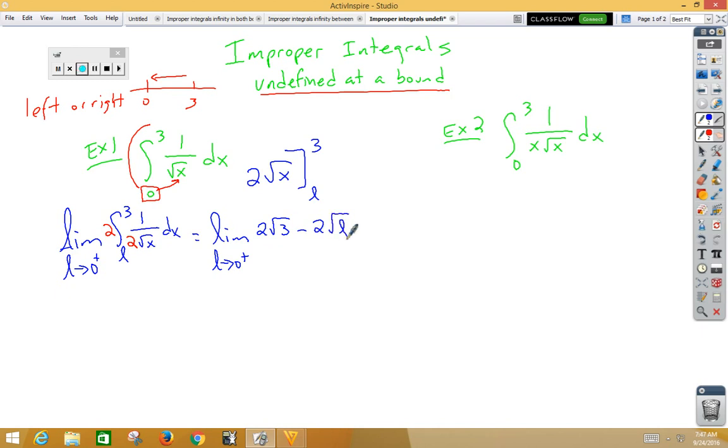Well, L is approaching 0 from the right side. The first thing we always try with a limit is to plug in. So if we were to plug in a 0 there, we would get 2 root 3. So this one converges. Let's take a look at another example.